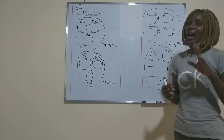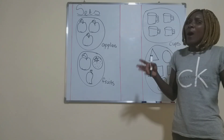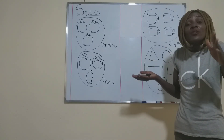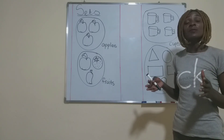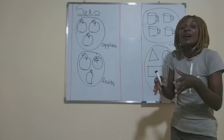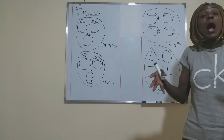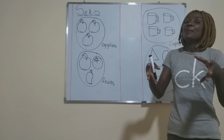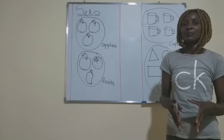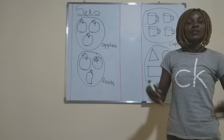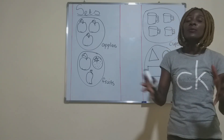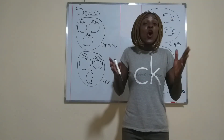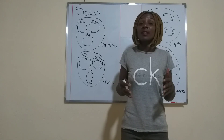Now, at your home, what kind of sets can you make? There are a lot of things that you have in your home that you can gather together that are similar, that are common, and then you can put them together and make a set. You can get spoons and put them together and make a set of spoons. In your home, you can make different types of sets.